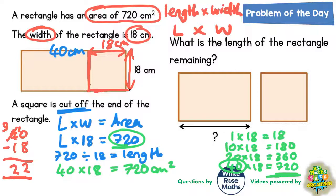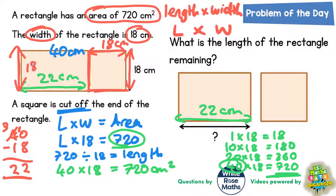So this distance on the rectangle must be 22. We can actually write it on here as well. So this distance is 22 centimetres. But the width of that rectangle is still 18. So this distance is still going to be 18.